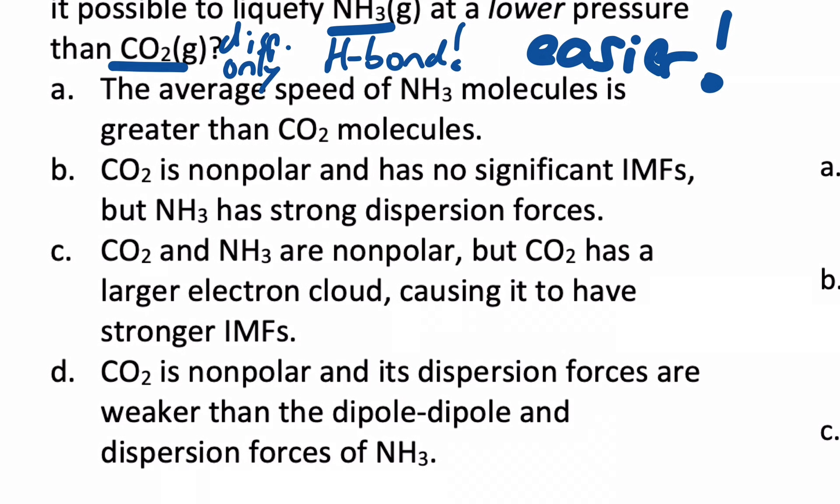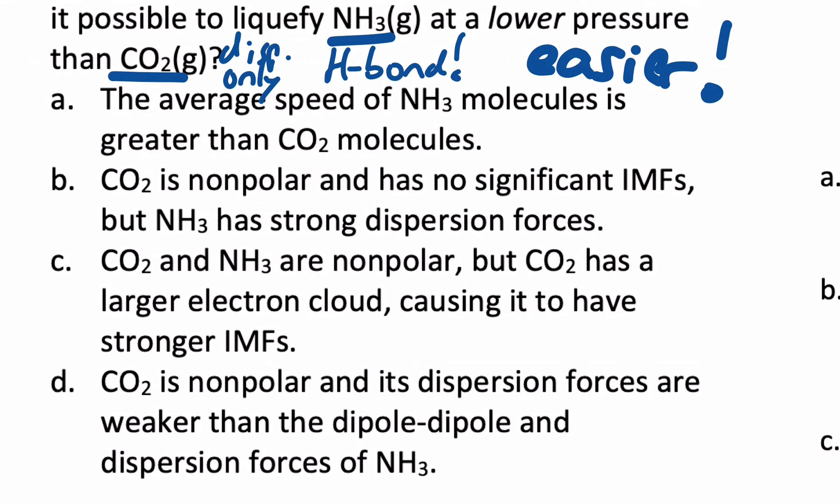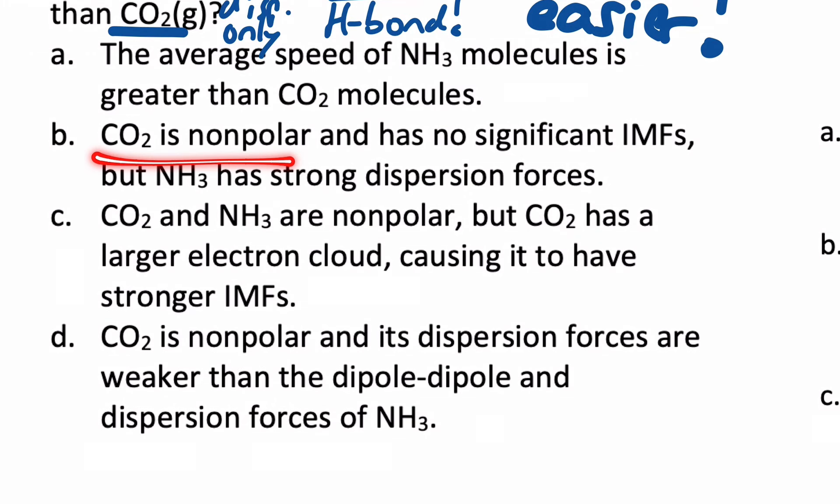Let's see. CO2 is non-polar. Let's go through the choices. The average speed of ammonia molecules is greater than CO2 molecules. That's a true statement, but it doesn't have anything to do with where they change phase. By the way, ammonia is faster because it's smaller. Ammonia has a smaller molar mass. It weighs 17 as opposed to CO2, which weighs 44. So that's a true statement, but it doesn't have to do with the question. CO2 is non-polar. That's true, and no significant IMFs, but ammonia has strong dispersion forces. Well, everything has dispersion forces, but actually CO2 would have stronger dispersion forces because it's a bigger molecule. It has more electrons. So B is just a false statement.